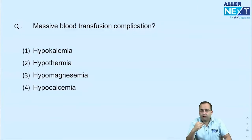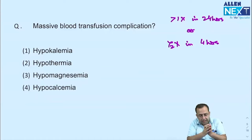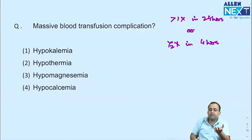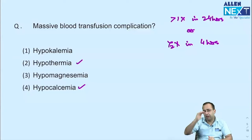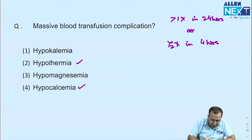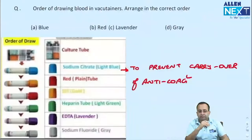Massive blood transfusion — defined as giving more than 1x blood volume in 24 hours or half x in 4 hours, where x is the amount of blood in the body. You are replacing the whole blood with stored blood. In stored blood, calcium is reduced — so hypocalcemia is seen. Both hypokalemia and hyperkalemia as well as hypomagnesemia can occur, but the best answer here is hypocalcemia.